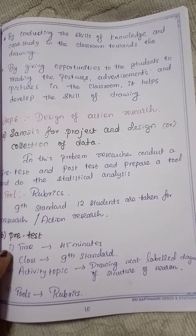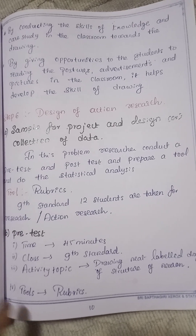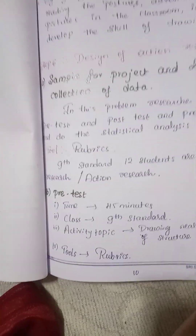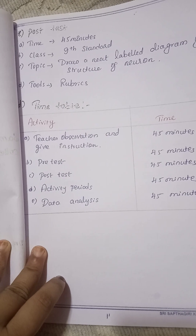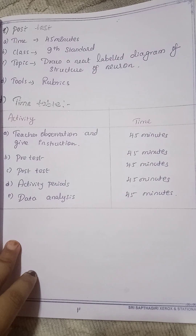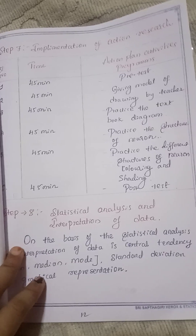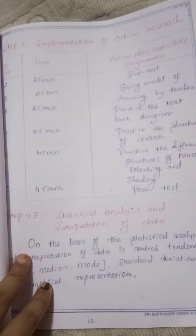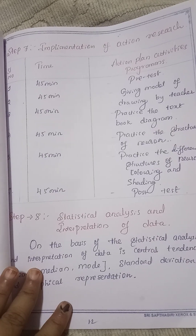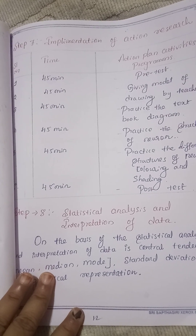In the sixth step, design of the action research — this is a very important thing. We are first collecting data and sampling, then giving a pre-test of 45 minutes for ninth standard students using two rubrics, followed by a post-test. The timetable of the activity shows what the teacher does in each 45-minute class. In the seventh step, implementation of the action research includes giving pre-tests, providing models, practicing drawing from the textbook diagram, and practicing coloring and shading.